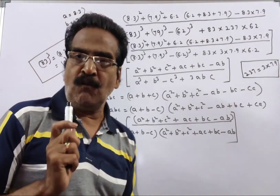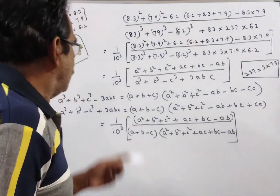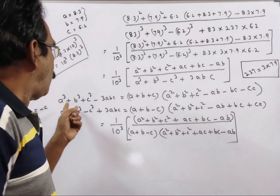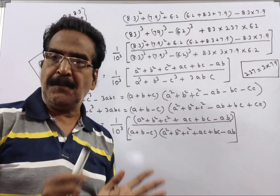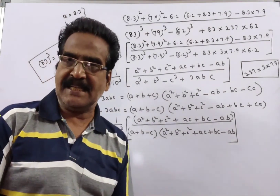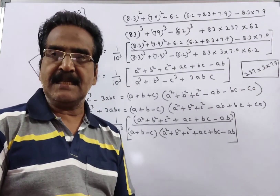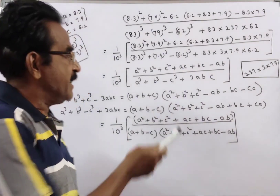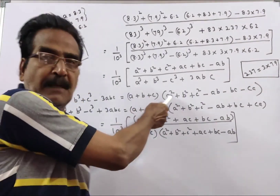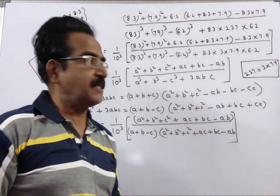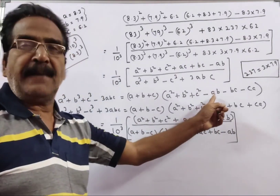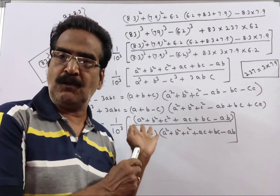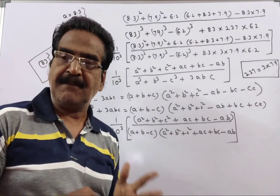Friends, we know one identity: A cube plus B cube plus C cube minus 3ABC is equal to A plus B plus C, into A squared plus B squared plus C squared minus AB minus BC minus CA.